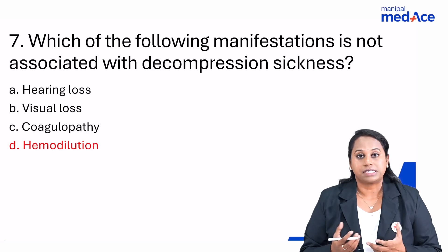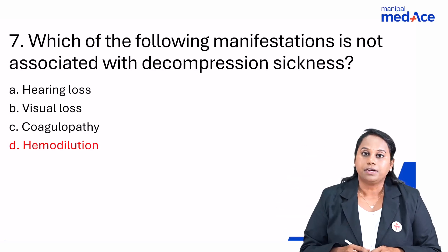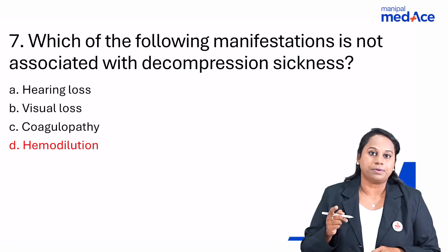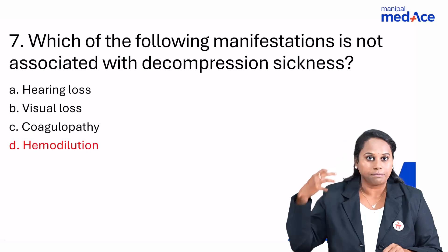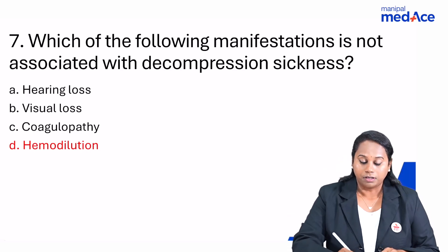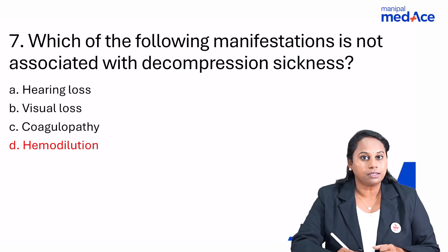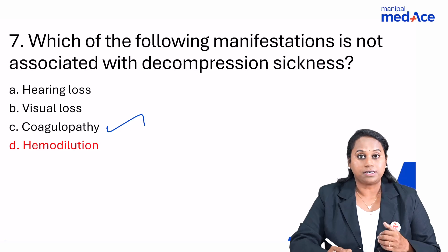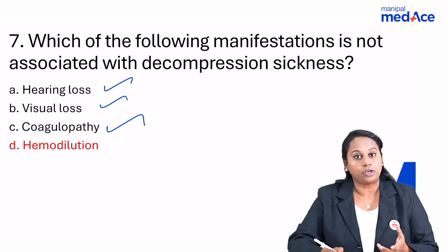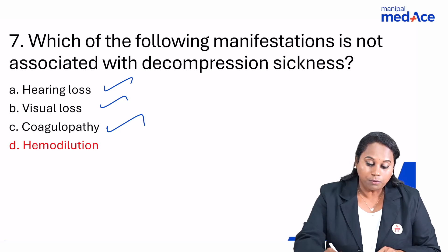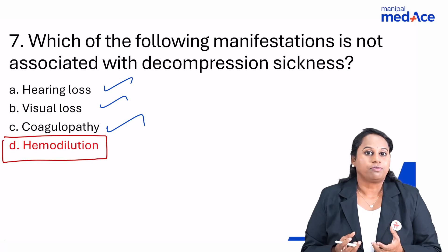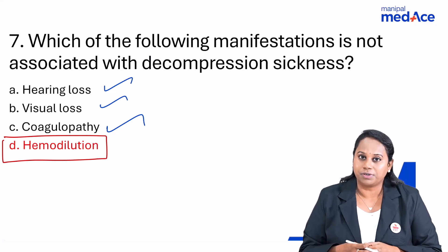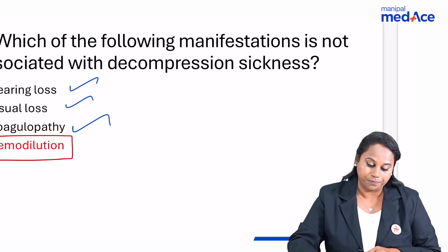Question number 7: which manifestation is not associated with decompression sickness? Deep sea divers and scuba divers ascending rapidly from high to low pressure cause gases to form bubbles that block the heart, brain, and lungs, resulting in MI, stroke, or pulmonary embolism. Hearing and visual loss can also happen. However, hemodilution — dilution of blood — has nothing to do with decompression sickness. So hemodilution is not a manifestation.